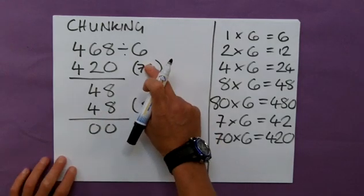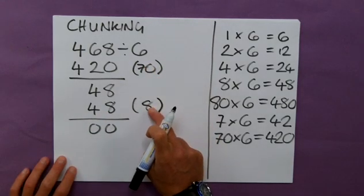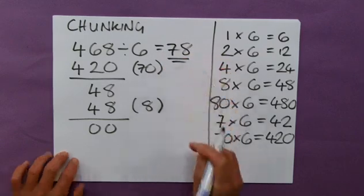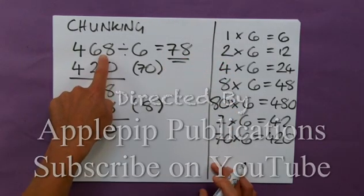So, my chunks are 70 and 8. So, my total there is simply 78. And that is my answer for a very complex question. Hope that helps.